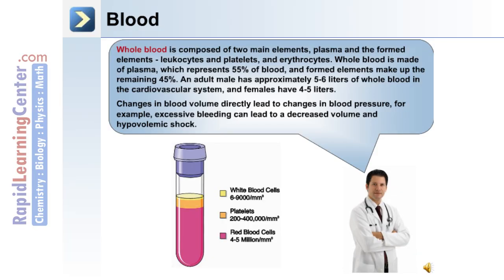Whole blood is composed of two main elements: plasma and the formed elements — leukocytes, or white blood cells, platelets, and erythrocytes, or red blood cells. Plasma makes up 55% of whole blood, and the formed elements make up the remaining 45%. An adult male has approximately 5 to 6 liters of whole blood in the cardiovascular system, and females have between 4 and 5 liters.